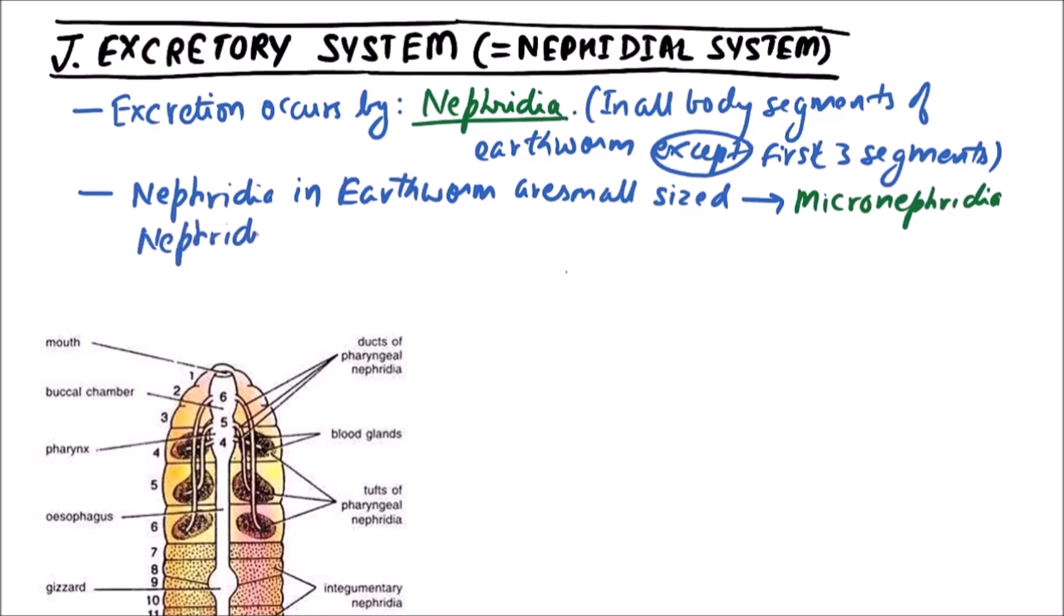While the nephridia in leach and nereis are large sized. That is why these are known as meganephridia.